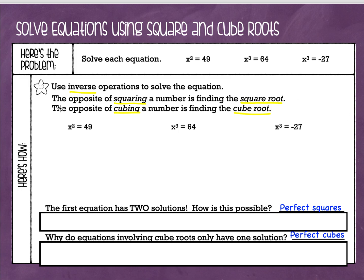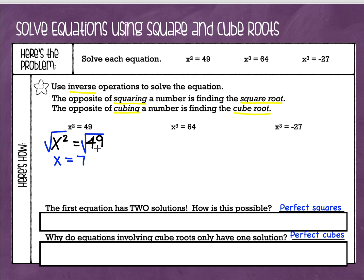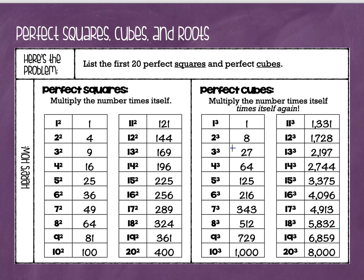I'm going to start by looking at my first equation: x squared equals 49. I'll write that equation again to give myself a little more room. The opposite of putting a number to the second power is finding the square root, because I'm asking myself, what number times itself would be 49? So I find the square root on both sides, and I'm left with x equals 7 — because 7 times 7 is 49. If we forget that, we can go back to our table, look at our list of perfect squares, and see that the square root of 49 is 7.